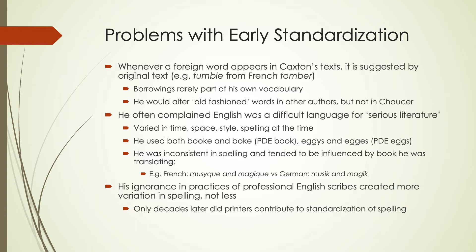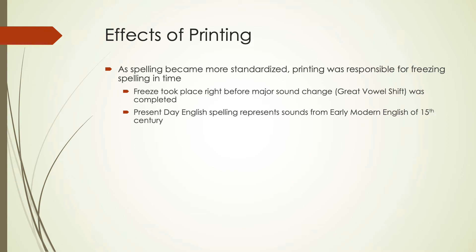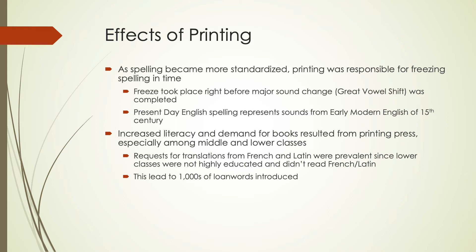It was only decades later that printers really started contributing to the standardization of spelling. Some of the effects that printing ended up having is that spelling did become more standardized, and as this happened, printing was responsible for freezing that spelling in time. This freeze of spelling took place right before the major sound change in early modern English — the Great Vowel Shift — was being completed. So present-day English spelling ends up representing the sounds that we would have seen from early modern English of around the 15th century.